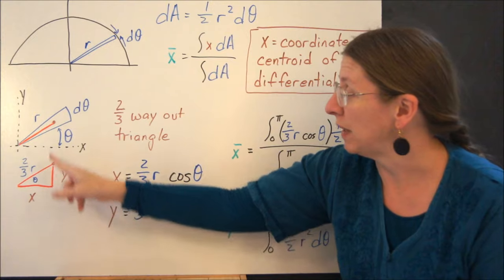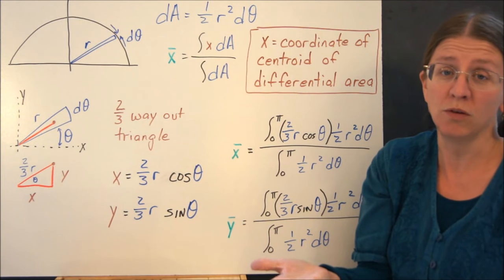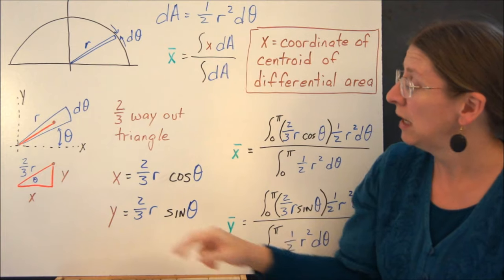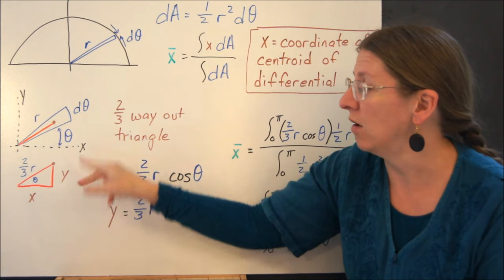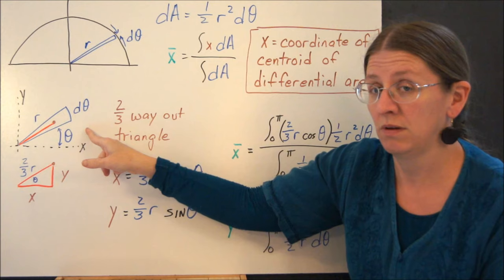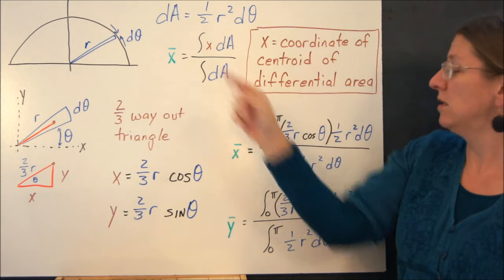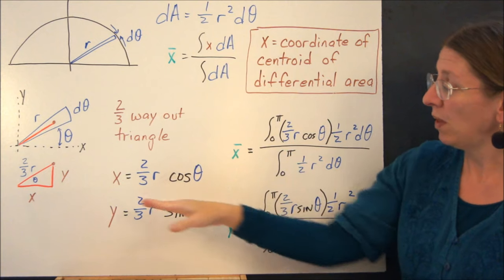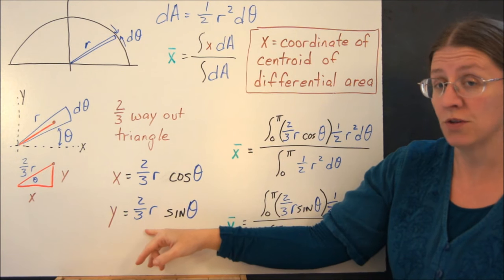The coordinates here are going to be two thirds of the way out my triangle, because it's a right triangle at a differential level. So I can say that this is two thirds of r sine and cosine of this angle. These are the coordinates that go into the integrands. And I can just say that x is two thirds r cosine theta and y is two thirds r sine theta.